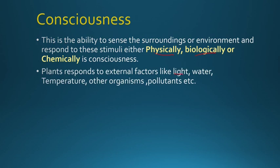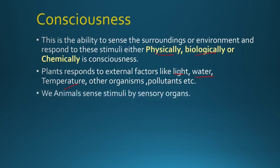Plants also respond to factors like light — plants tend to move towards light. They also respond to availability of water, temperature, other organisms, and pollutants. The touch-me-not plant closes its leaves when touched — that is a response to stimuli. Depending on temperature, there are different types of crops. If you place plants in hot temperatures without watering them enough, the leaves will droop down. Animals also respond to stimuli through five sensory organs: eyes, ears, nose, skin, and taste buds — receiving stimuli and giving responses.